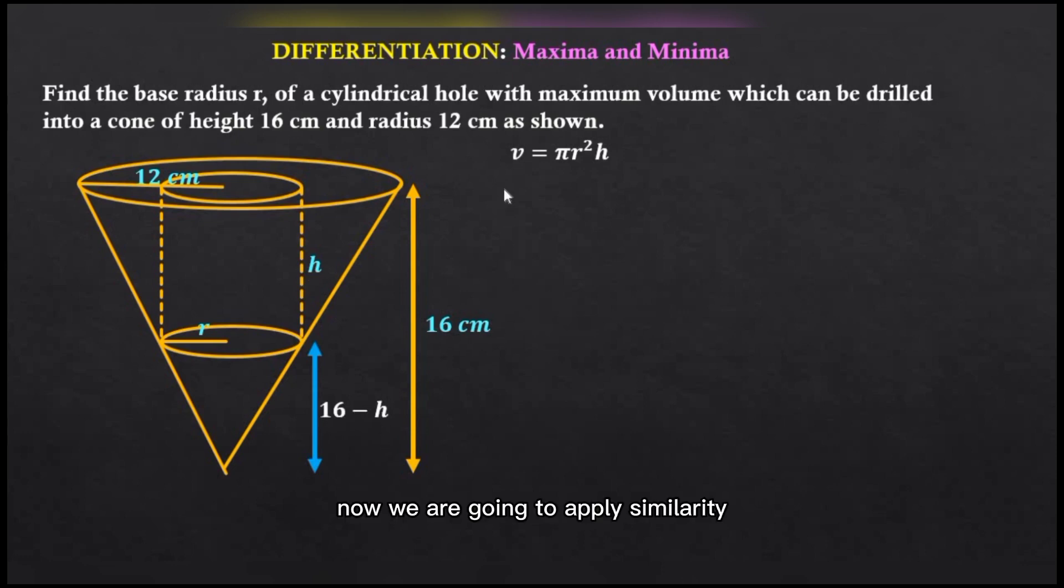Now we are going to apply similarity. So by similarity we'll have the linear scale factor, that is the ratio of the corresponding lengths of the two similar solids.